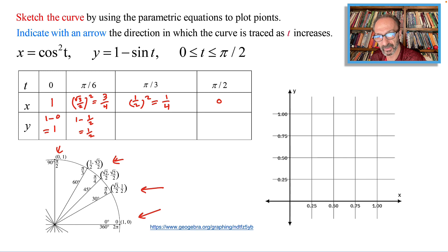When it's 60 degrees, π over 3, sine is √3 over 2, so we have one minus √3 over 2, and that simplifies to approximately 0.13. When it's 90 degrees, sine is 1, and 1 minus 1 is 0. Now we have the coordinates.